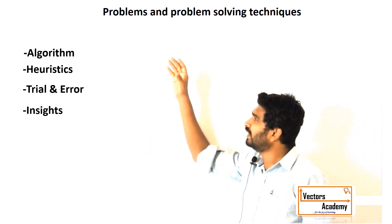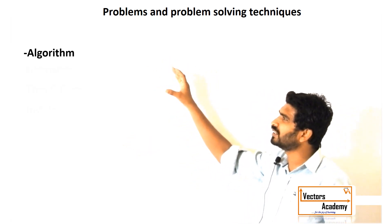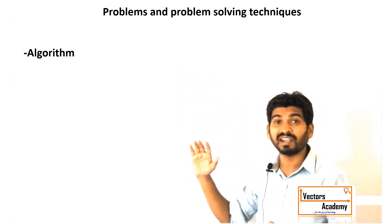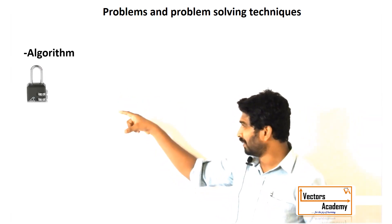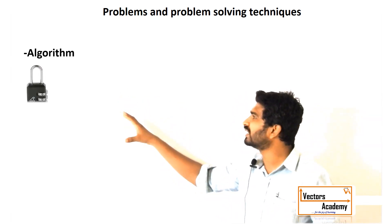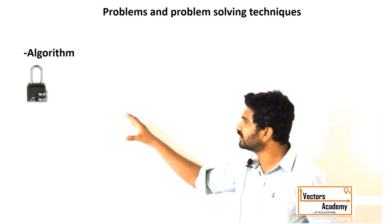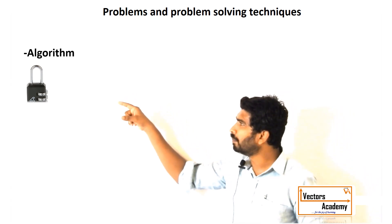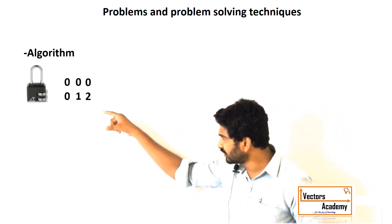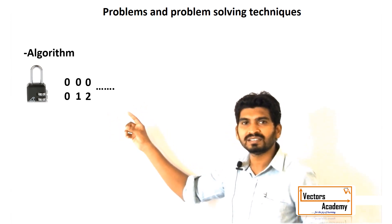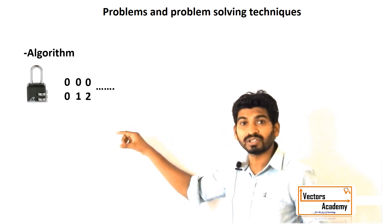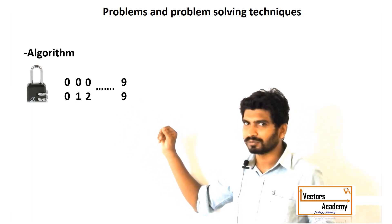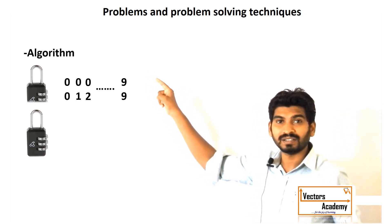The algorithm technique is a scientific, step-by-step approach that guarantees an answer. For example, if there is a number lock we need to open and we don't know the combination, we try every combination starting from 0-0, then 0-1, 0-2, 0-3, all the way up to 99, until the lock opens.